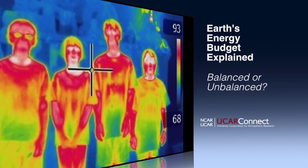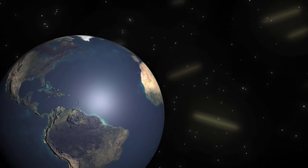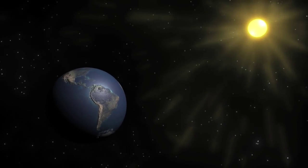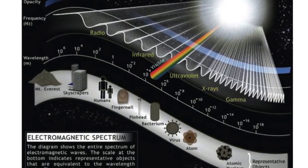Almost everything radiates energy, even you. The sun radiates different forms of electromagnetic energy, but especially visible light. These wavelengths enter the Earth's system, but then what happens?